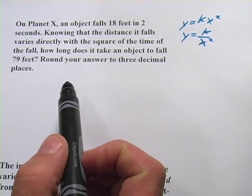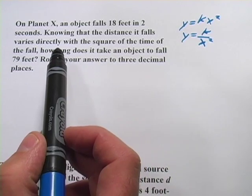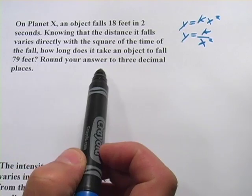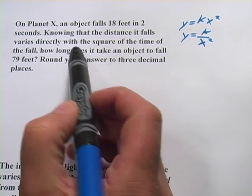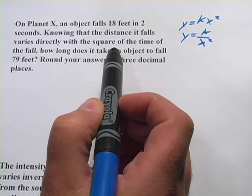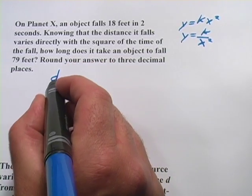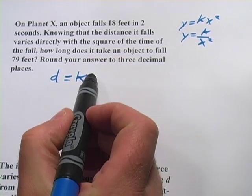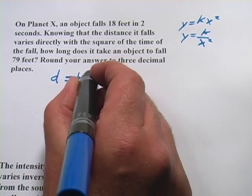Let's try one. This one says, On planet x, an object falls 18 feet in 2 seconds. Knowing that the distance it falls varies directly with the square of the time of the fall, how long does it take an object to fall 79 feet? So, we're told that distance varies directly with the square of the time. So I'm going to rewrite this formula with d for distance. Always on the left here is the thing that varies. Then we have our constant. And then the thing it varies with comes over here multiplied by the constant. And this is the square of the time, so it's t squared.